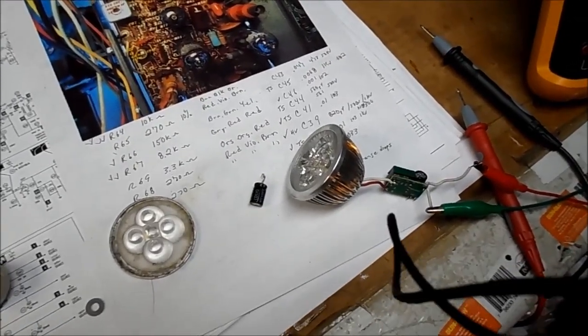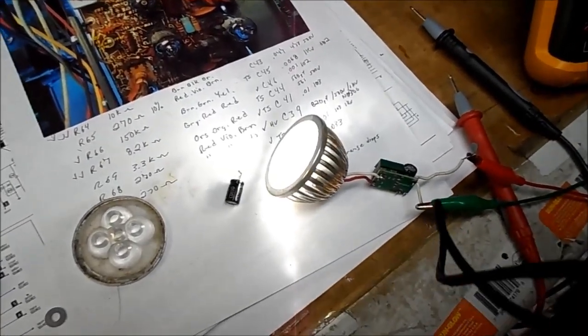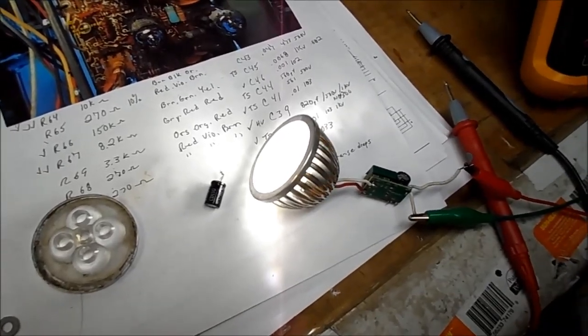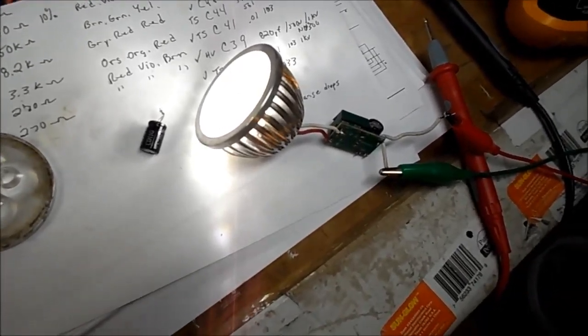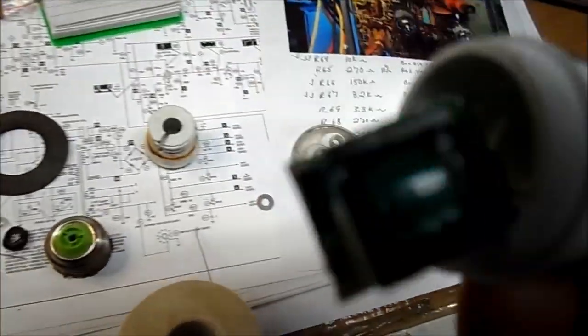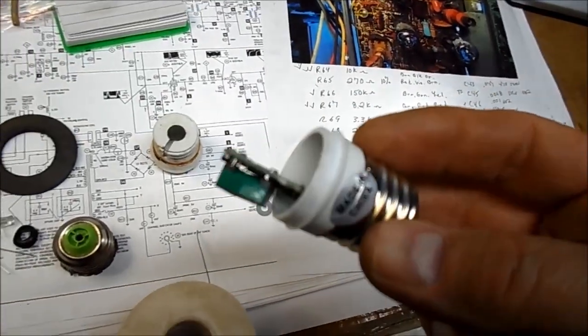We've got the one that was working before working again with the circuit from the first light we were working on. So something happened to this one circuit, and it's not the capacitor.